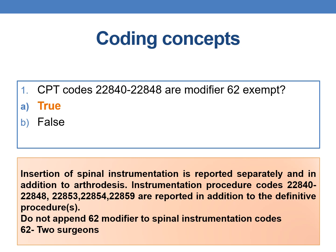If you go in the CPT book for 22840 and 22848, they are spinal instrumentation codes. The insertion of spinal instrumentation is reported separately and in addition to arthrodesis. The instrumentation procedure codes 22840, 22848, 22853, 22854, and 22859 are reported in addition to the definitive procedure, and under it you can find the note: do not append modifier 62 to spinal instrumentation codes. In the book itself we can find this statement, and modifier 62 is used to indicate two surgeons. These code ranges are exempted from modifier 62.